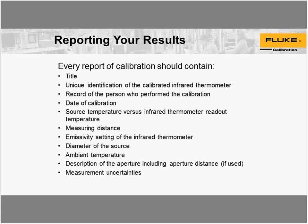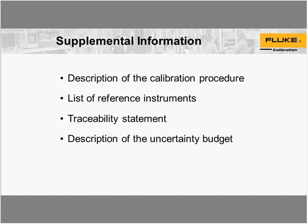When reporting results, your report of calibration should contain the following: the title; identification of the calibrated infrared thermometer such as model number and serial number; a record of the person who performed the calibration; the date of calibration; a record of the reference temperature versus the infrared thermometer readout temperature; measuring distance; specific settings of the infrared thermometer; diameter of the source — specifying your calibration geometry so the customer knows how you calibrated it; the ambient temperature of the laboratory; a description of the aperture if used and where it was in the calibration geometry; and the measurement uncertainties for that calibration point. You also want descriptions of the calibration procedure, reference instruments, traceability statement, and a description of the uncertainty budget.